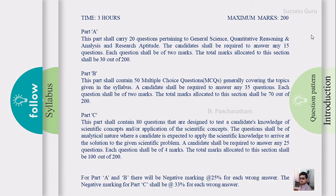For the question pattern, this is a three-hour exam with a maximum of 200 marks, divided into three parts: Part A, Part B, and Part C. Part A consists of general sciences, quantitative reasoning, analysis, and research aptitude. Candidates must attempt a minimum of 15 questions out of 20, with each question carrying 2 marks, giving a maximum of 30 marks for this section. Part B contains 50 multiple choice questions covering topics from the syllabus, and candidates must answer 35 questions, with each question carrying 2 marks, for a total of 70 marks.